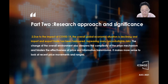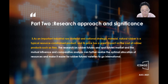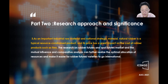It makes more sense to look at recent price movements and ranges. As an important industrial raw material and national strategic resource, Natural Rubber is a typical resource-constrained product, and its price has a great impact on the cost of rubber products such as tires. The research on the rubber futures and spot market, their mutual influence and comparative analysis, can further realize the optimal allocation of resources and make it easier for rubber futures varieties to go international.